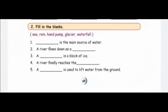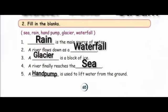Today is your homework. From a letter one, filling the blanks. Options are sea, rain, hand pump, glacier and waterfall. Question number one: blank is the main source of water. Second one: A river flows down as a blank. Third one: A blank is a block of ice. Fourth one: A river finally reaches the blank. Fifth one: A blank is used to lift water from the ground. Answer is: Rain is the main source of water. A river flows down as a waterfall. A glacier is a block of ice. A river finally reaches the sea. A hand pump is used to lift water from the ground.